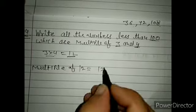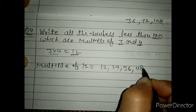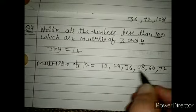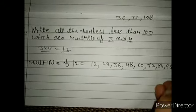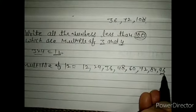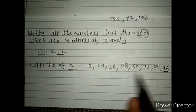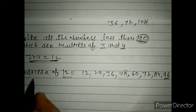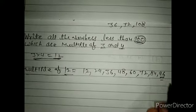Multiples of 12: 12, 24, 36, 48, 60, 72, 84, 96. The next multiple would be 108, but the condition is less than 100, so we stop at 96. These are the multiples of both 3 and 4 that are less than 100.